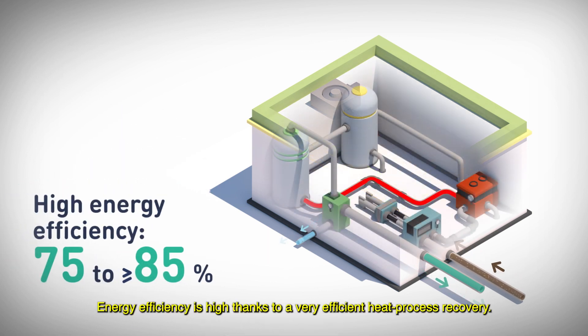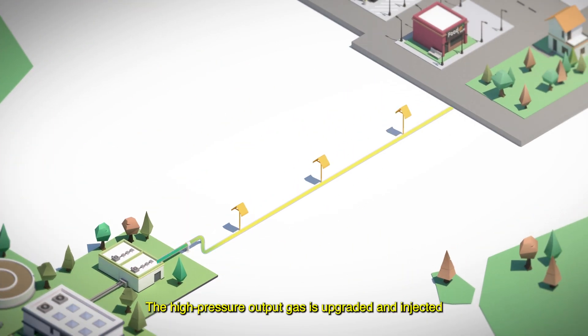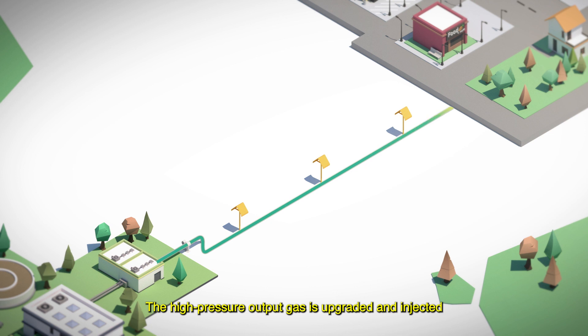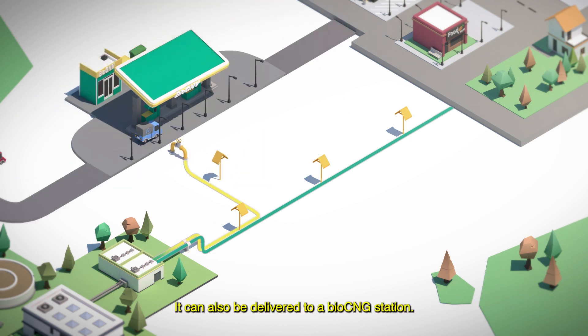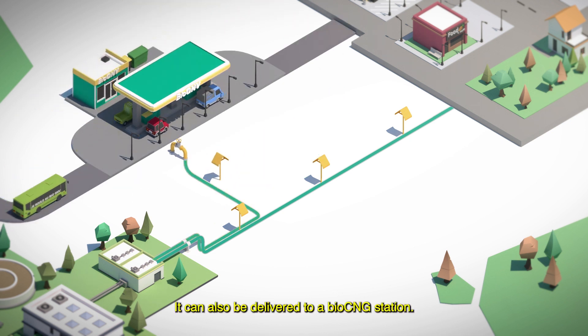Energy efficiency is high thanks to very efficient heat process recovery. The high-pressure output gas is upgraded and injected as low-carbon or renewable gas into the GRT gas grid, substituting imported natural gas. It can also be delivered to a bio-CNG station.